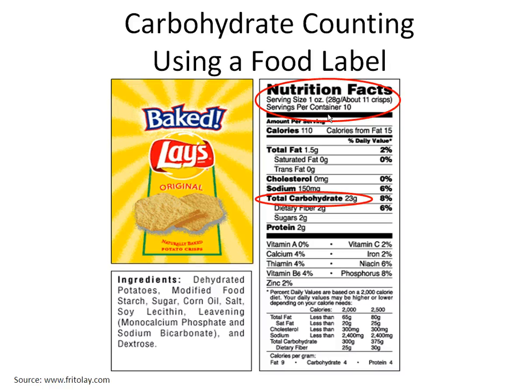For example, if you eat two ounces, you are eating 46 grams of carbohydrate. If you double the portion size, you need to double the total carbohydrate grams.